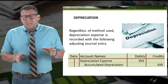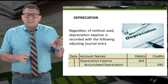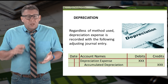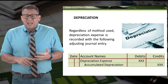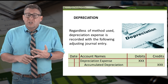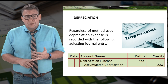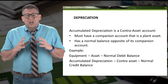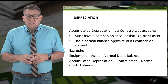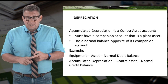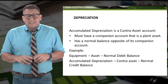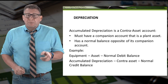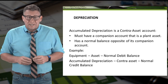Once we calculate depreciation expense, we make the following adjusting entry to record the amount: we debit depreciation expense and we credit accumulated depreciation. Recall that accumulated depreciation is a contra-asset account, meaning it is an asset but has a normal credit balance rather than a debit balance like all other asset accounts.